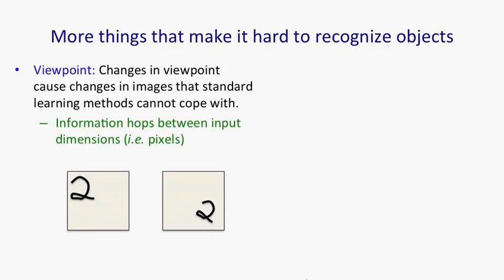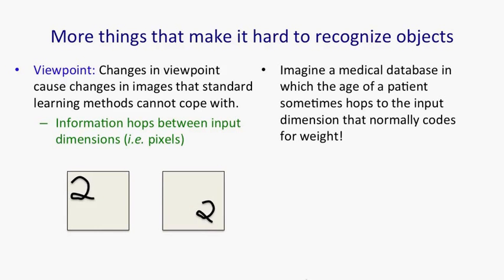Just to stress that point, suppose we had a medical database in which one of the inputs is the age of a patient and another input is the weight of the patient. And we start doing machine learning. And then we realize that some coder has actually changed which input dimension is coding which property. So for one of the coders, they've put weight where they should have put age and they've put age where they should have put weight.